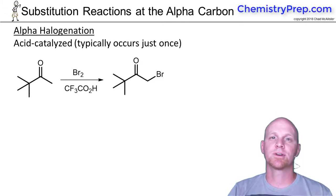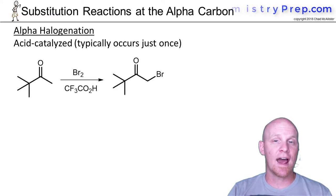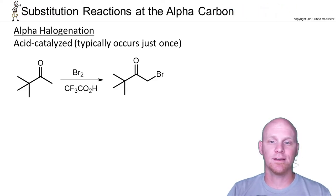Now the first alpha substitution reaction we're going to look at is called alpha halogenation. We're simply going to be replacing an alpha hydrogen with a halogen, normally chlorine, bromine, or iodine.